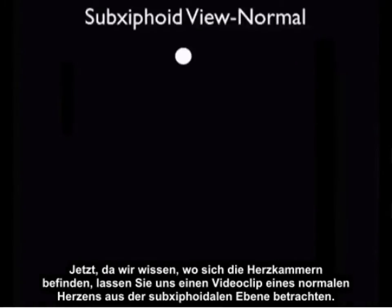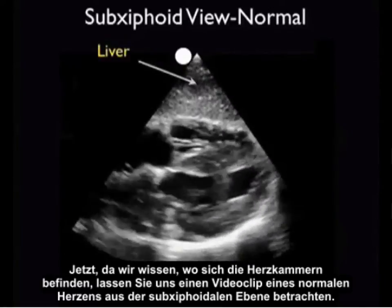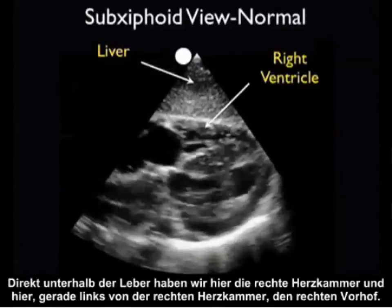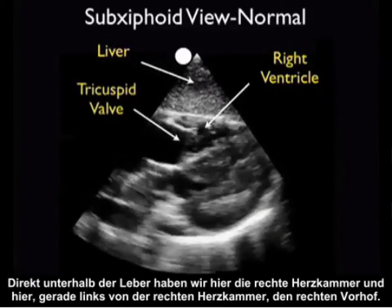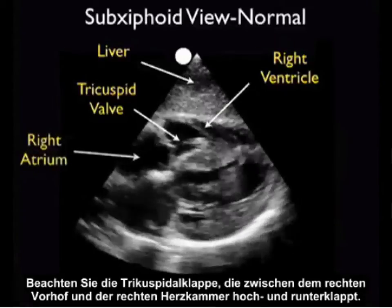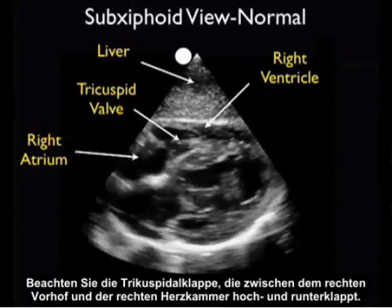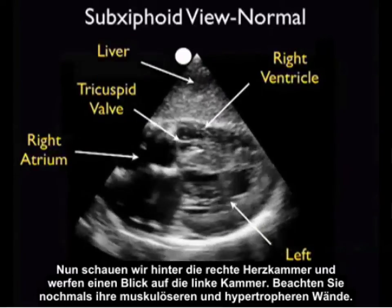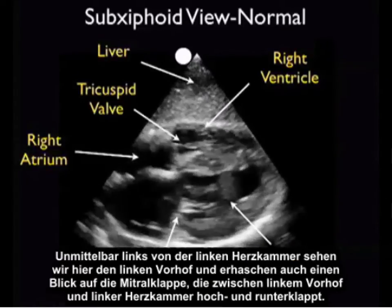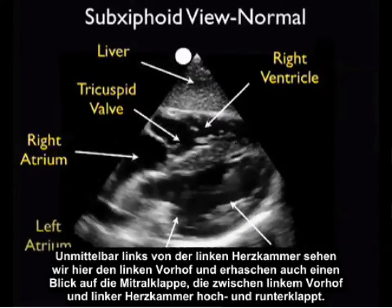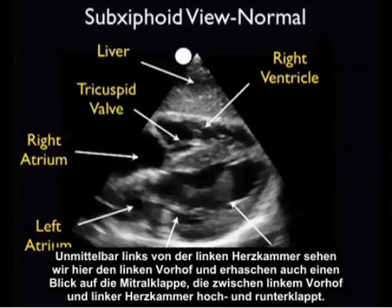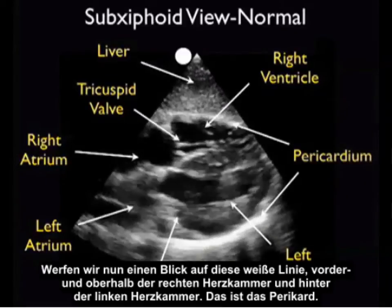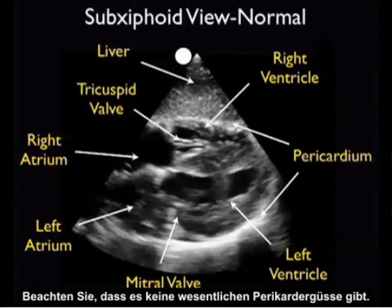Now that we know where the chambers are, let's take a look at a video clip of a normal heart from the subxiphoid plane. The liver is our acoustic window onto the heart from this plane, so the liver will be seen anteriorly just at the top of the screen. Just below the liver, we appreciate the right ventricle, and just to the left of the right ventricle we can appreciate the right atrium. Notice the tricuspid valve flipping up and down in between the right atrium and the right ventricle. Posterior to the right ventricle, we appreciate the left ventricle — notice again its more muscular and hypertrophic walls. Just to the left of the left ventricle, we appreciate the left atrium, and we also get a glimpse of the mitral valve flipping up and down in between the left atrium and the left ventricle. Now let's look at the white line both anteriorly above the right ventricle and posteriorly below the left ventricle — that is the pericardium. Note the absence of any significant pericardial effusions.